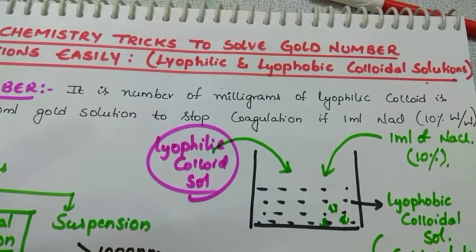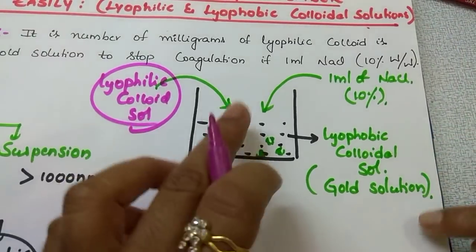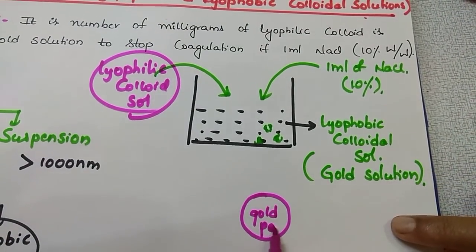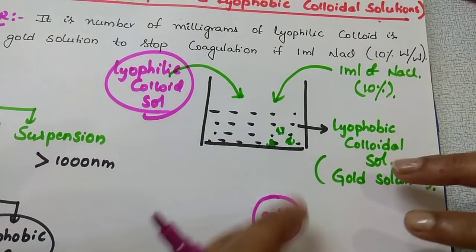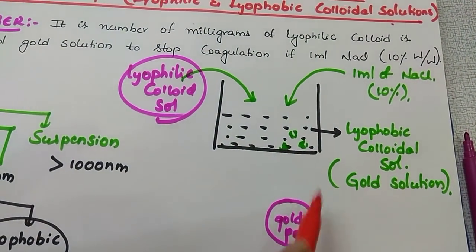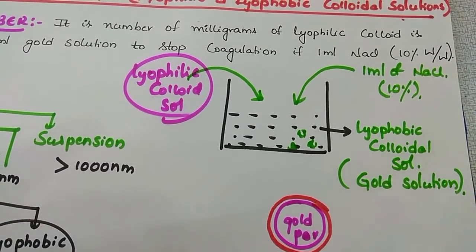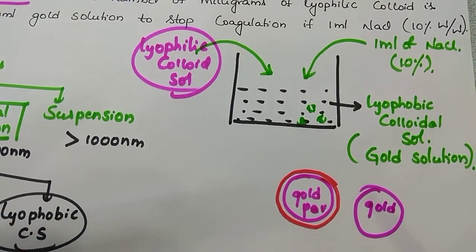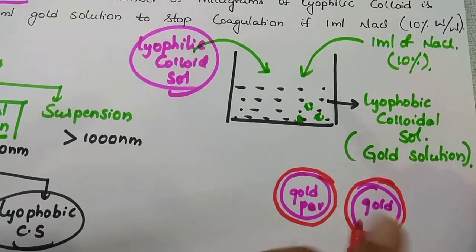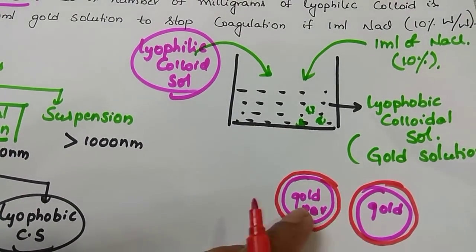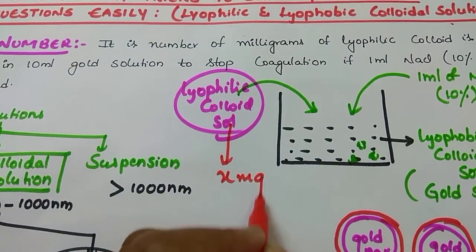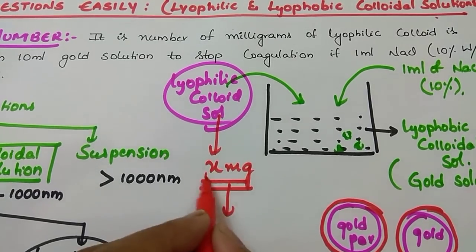What we are going to add is lyophilic colloidal solution. Why? Because it is stable. Whenever we add this solution, what happens is - for example, this is your gold particle which is unstable. This gold particle will combine with one more and form a precipitate. But whenever we add lyophilic colloidal solution, it forms a protective layer around the gold particle. One more gold particle is also protected with a layer. Both gold particles are protected inside the layer, so they won't react with each other. In this way we do the protection. How many milligrams of lyophilic colloidal solution we are adding - that number we call the gold number.